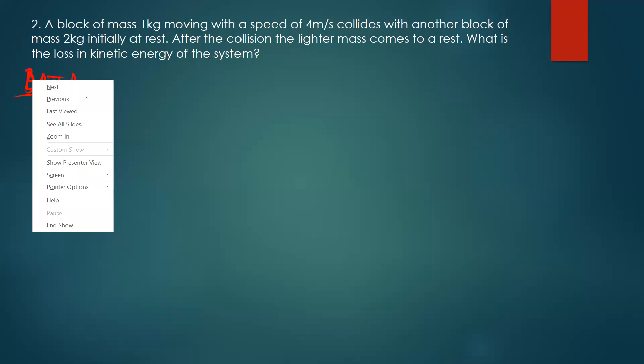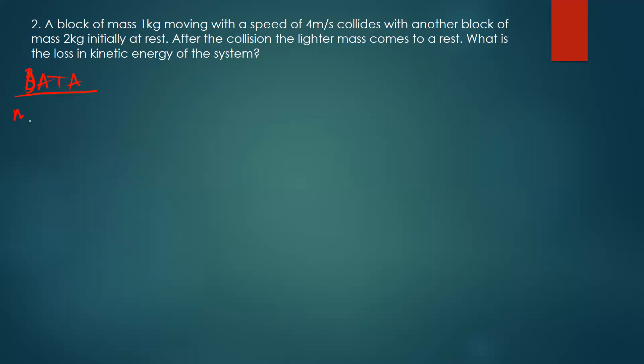The first thing we've been given is m1, which is 1 kg. The other thing is v1, which is 4 meters per second.